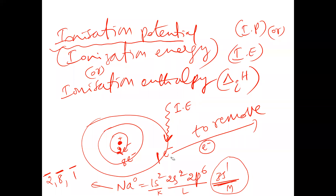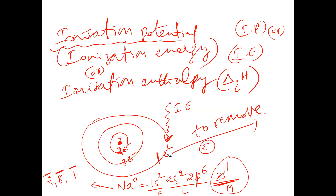The sodium electronic configuration can also be written as 2, 8, 1 — two electrons in the K shell, eight electrons in the L shell, one electron in the M shell. The outermost orbit of sodium is the third orbit, the valence shell is M, and the number of outermost electrons is one.